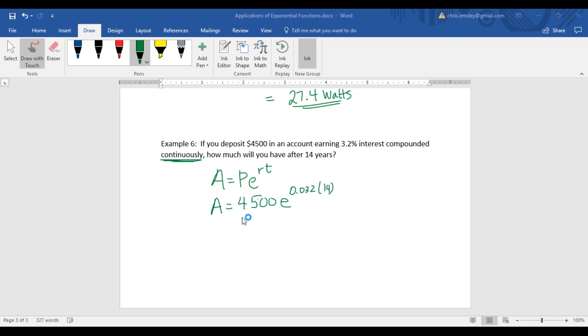When you plug this into your calculator, you should get $7,043.30. Rounding to the nearest hundredth so we get our dollars and cents. And that's it.